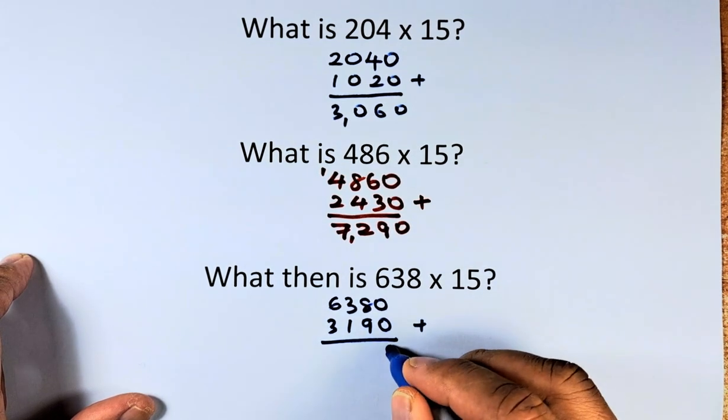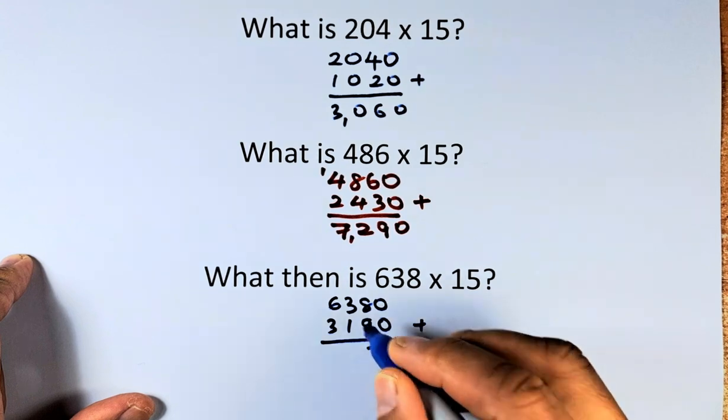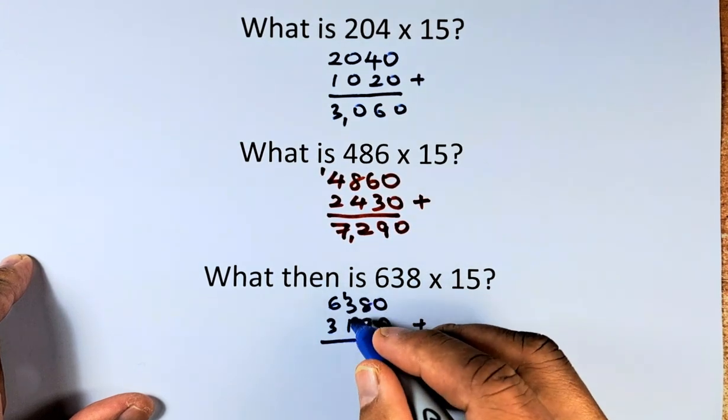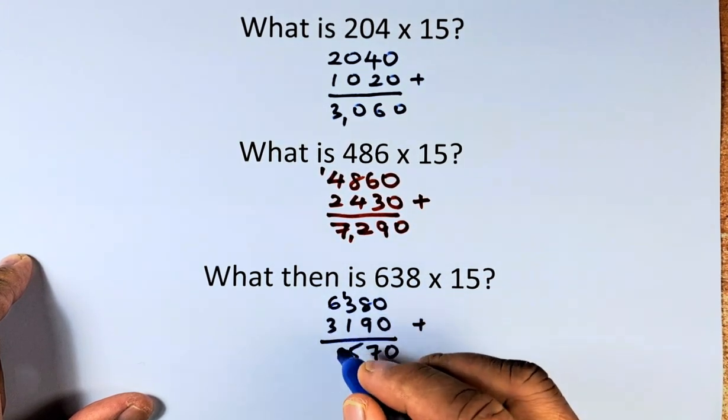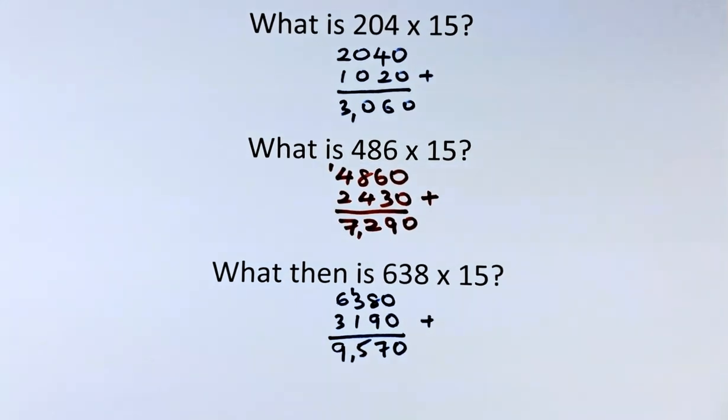Then we add the two numbers: 0 plus 0 is 0, 8 plus 9 is 17, carry 1. 1 plus 3 plus 1 is 5, 6 plus 3 is 9. So 638 multiplied by 15 equals 9570.